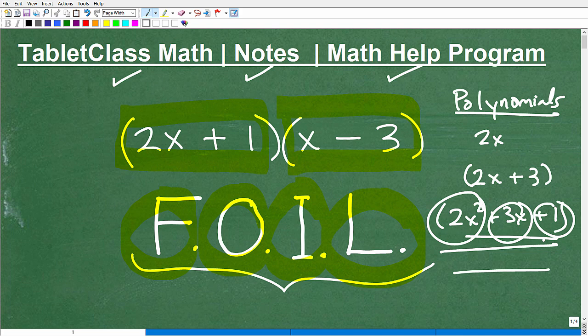Anything above and beyond three terms, and these guys, these individual pieces right here are called terms. Anything beyond three, we just refer to as a polynomial. So what we're talking about, this FOIL method specifically refers to multiplying two binomials. Not a monomial times a binomial, not a binomial times a trinomial, not a trinomial times a trinomial. You get the picture, right?